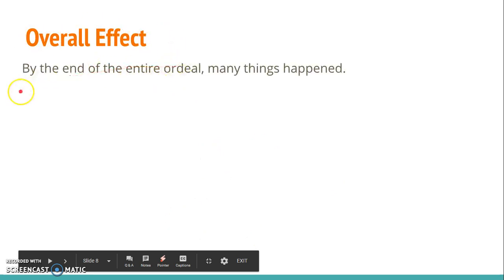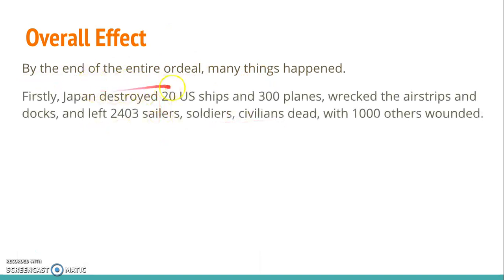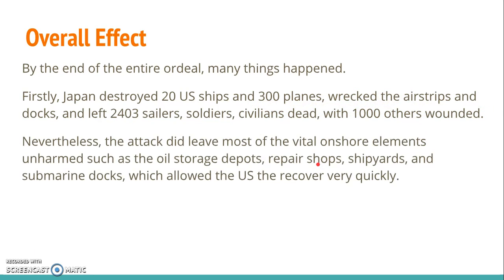Going over the overall effects: by the end of the attack, Japan destroyed 20 U.S. ships and 300 planes, and wrecked the airstrips and docks. Unfortunately, 2,403 sailors, soldiers, and civilians were killed with another 1,100 wounded. There was a small silver lining though — the attack didn't target vital onshore elements such as the oil storage depots, repair shops, shipyards, and submarine docks, which helped the U.S. recover really quickly.